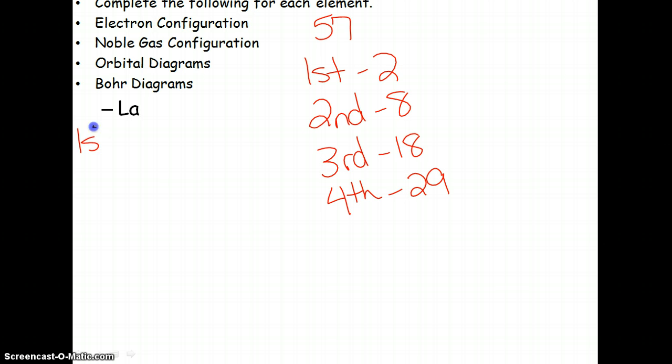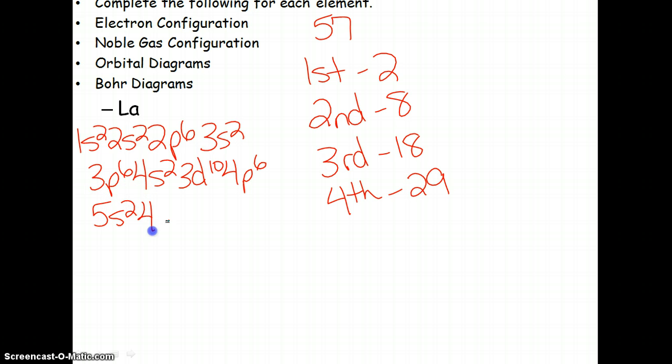Noble gas, I mean the electron configurations, 1s2, 2s2, 2p6, 3s2, 3p6, 4s2, 3d10, 4p6, 5s2, 4d10, 5p6, and 6s2.